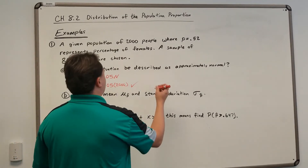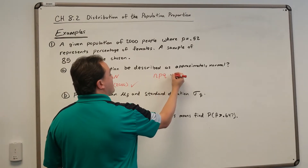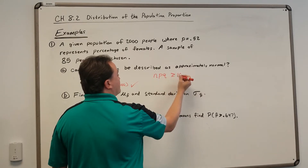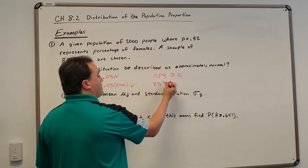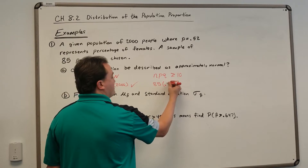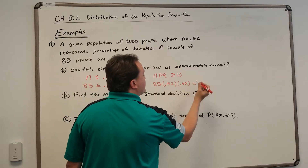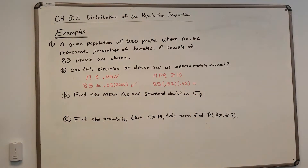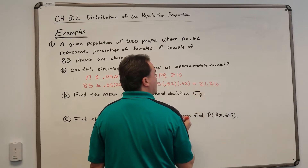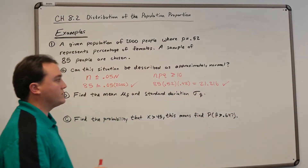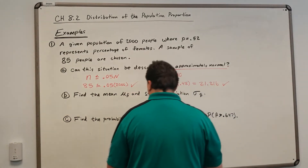The second condition for approximate normality is that NPQ must be greater than or equal to 10. NPQ is the number of people surveyed times the probability of success times Q: 85 times 0.52 times 0.48, which gives us 21.216. That's greater than 10, so this checks out. Yes, our curve is approximately normal.